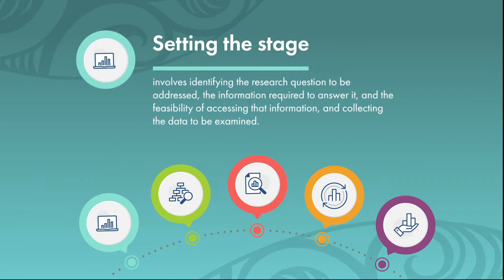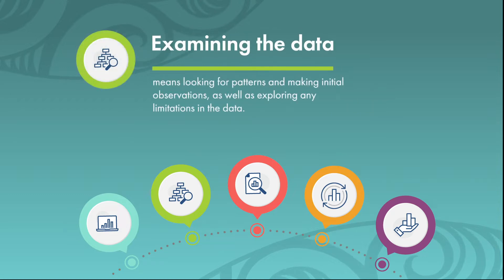Setting the stage involves identifying the research question to be addressed, the information required to answer it, and the feasibility of accessing that information and collecting the data to be examined. Examining the data means looking for patterns and making initial observations, as well as exploring any limitations in the data.